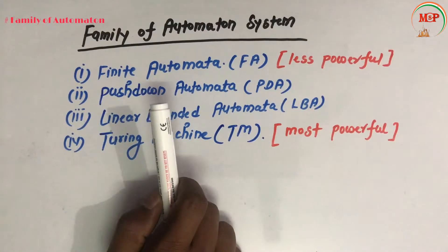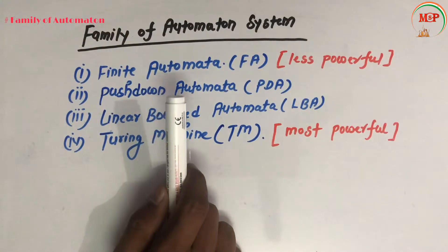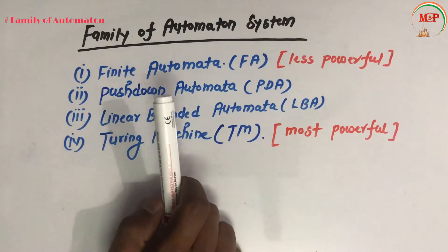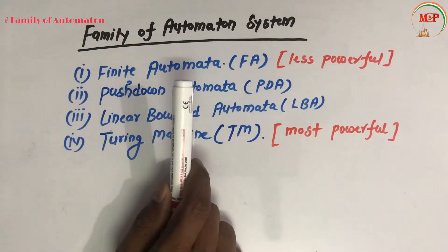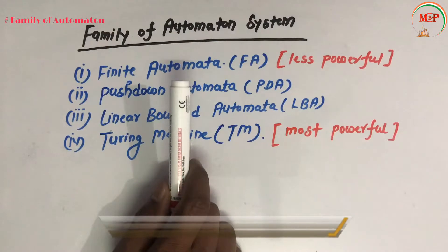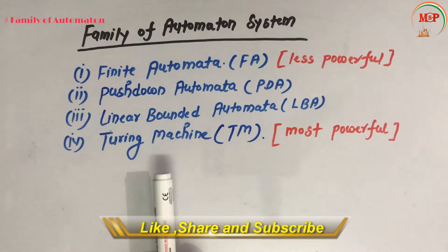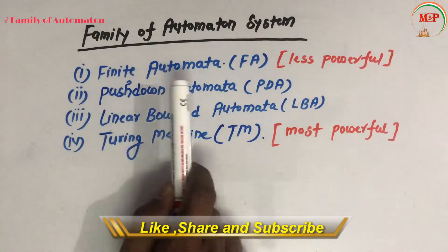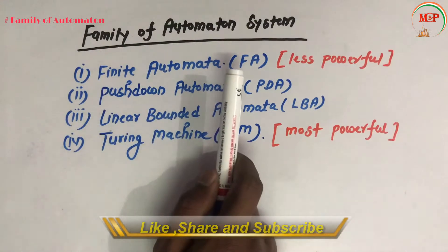Hello friends, in this video we are going to study about the topic family of automation system. The family of automation system is divided into four types. The first is finite automata (FA), and FA is less powerful. The second one is pushdown automata (PDA).